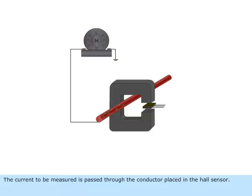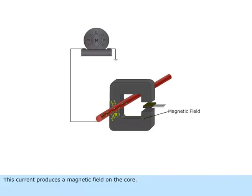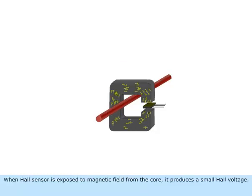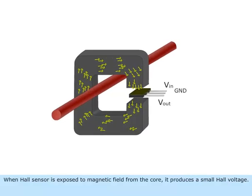The current to be measured is passed through the conductor placed in the Hall Sensor. This current produces a magnetic field on the core. This magnetic field depends on the current flowing through the conductor. When Hall Sensor is exposed to magnetic field from the core, it produces a small Hall voltage.